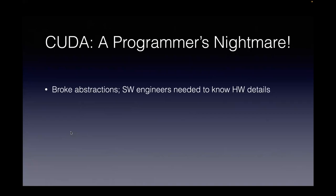As a software engineer, you were always taught that abstraction is a good thing. You don't need to know every hardware detail to extract performance. But as a CUDA programmer, you really had to know what the hardware was capable of — how many thread blocks could execute, how many threads in a thread block, where to put synchronization, which synchronization parameters are more expensive. These were abstractions built over decades for CPU programming that were all broken, because the software engineer now had to know these details to extract performance.